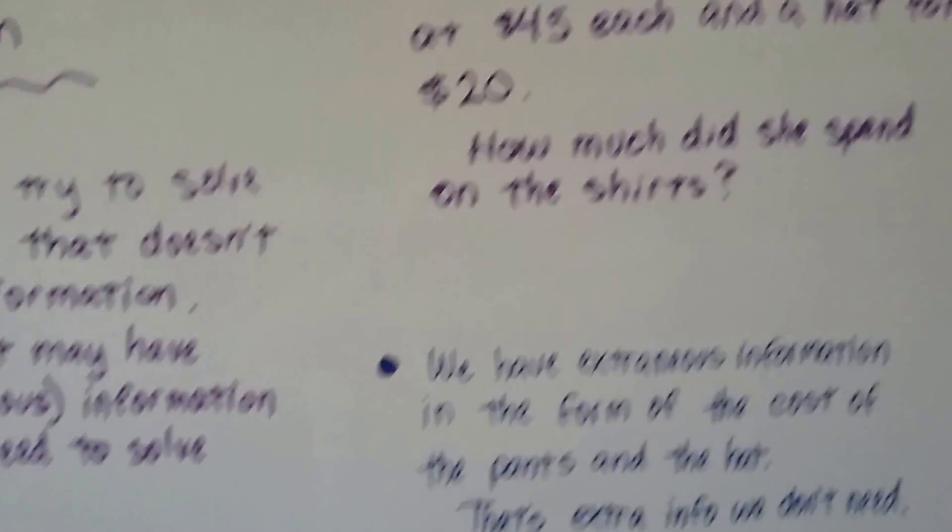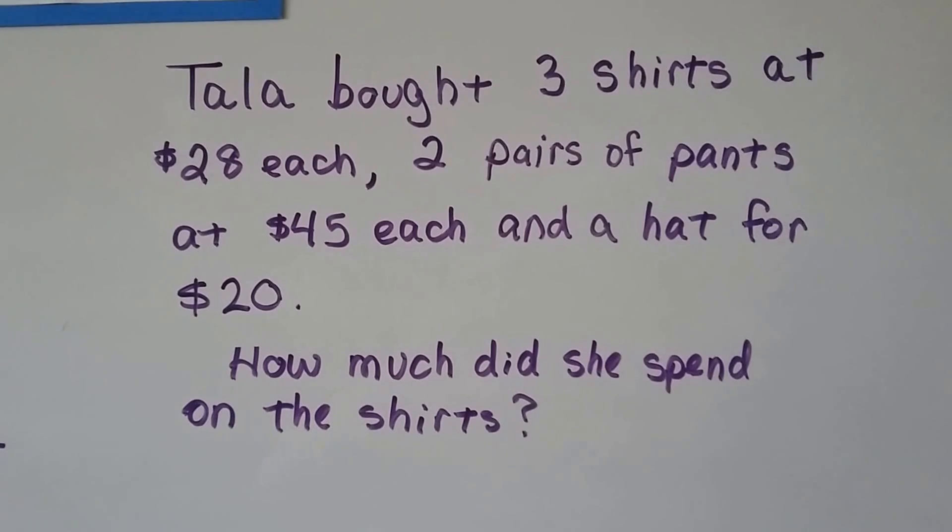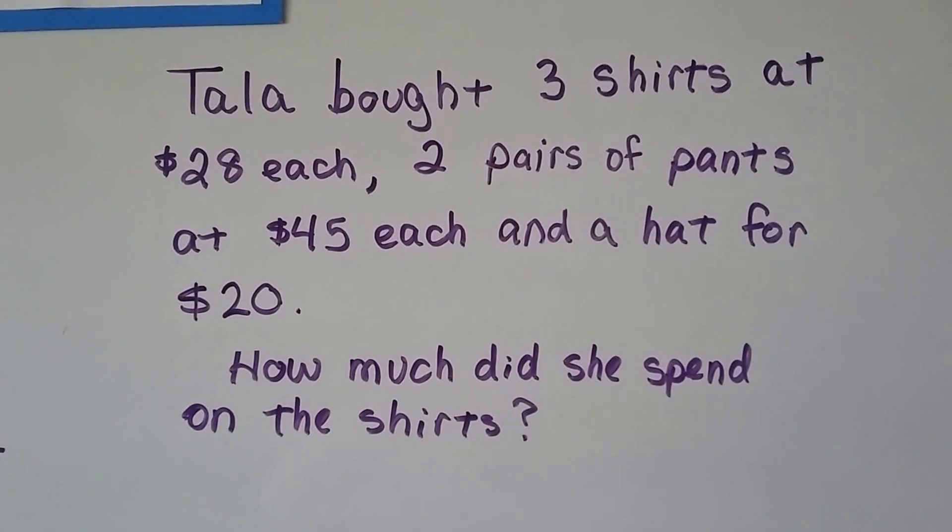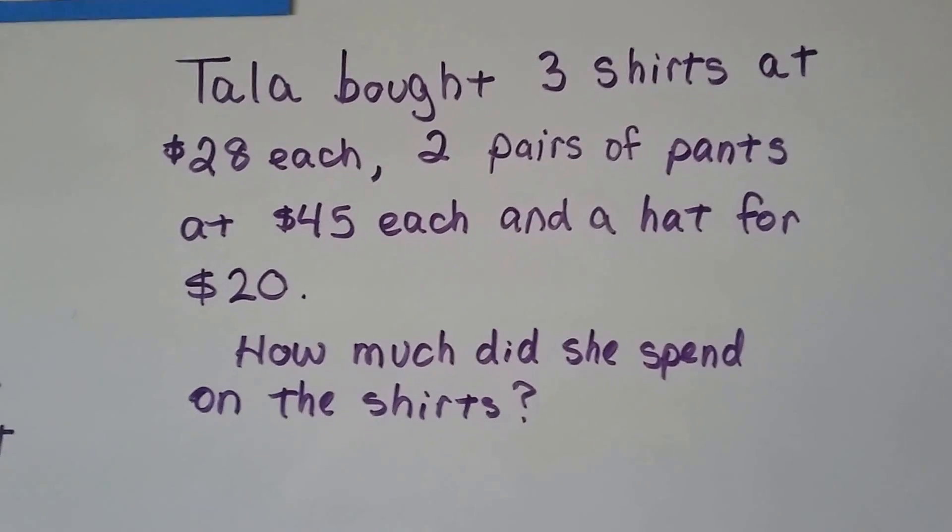So let's take a look at this word problem. Tala bought three shirts at $28 each, two pairs of pants at $45 each, and a hat for $20. How much did she spend on the shirts? Well, that was given right up in the beginning, wasn't it? That part of the problem.